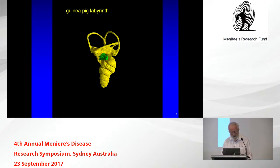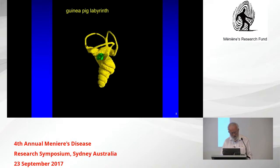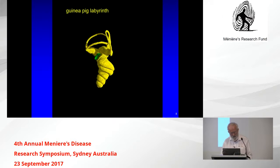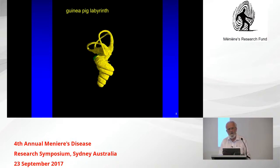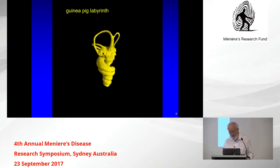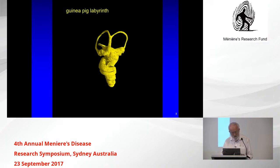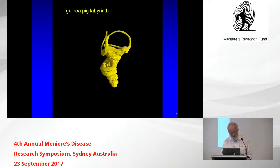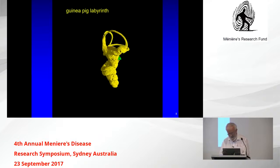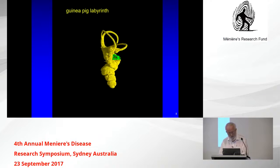Working on humans is extremely difficult, so we need an animal model. Most of the animal work is done on guinea pigs, and Daniel will be talking about this later. You can see how very similar the guinea pig labyrinth is. I haven't reconstructed the endolymphatic duct and sac in the guinea pig, but they are very similar to what happens in humans.